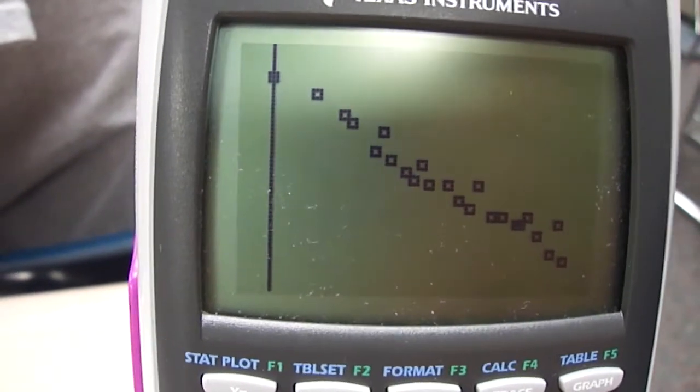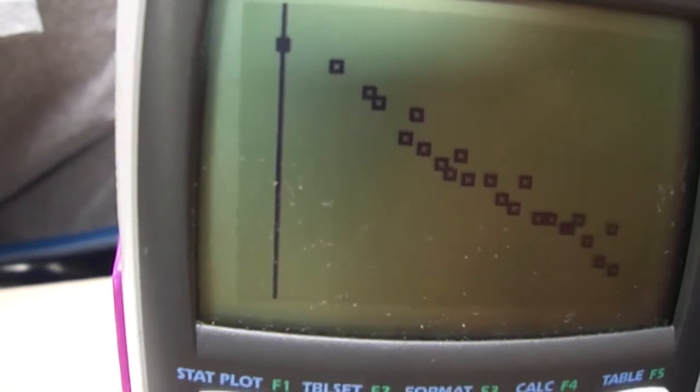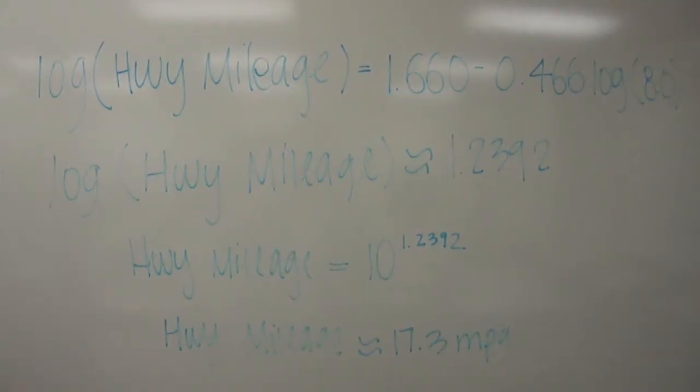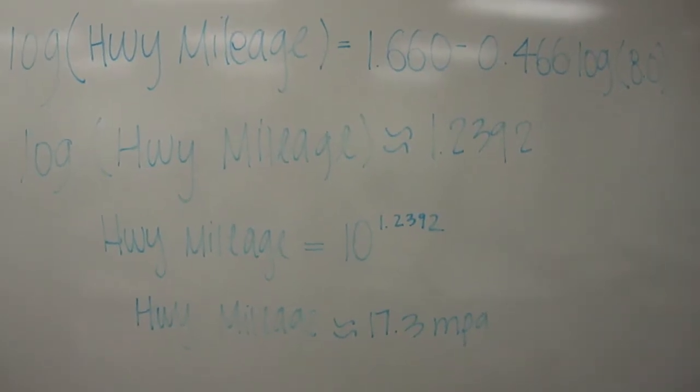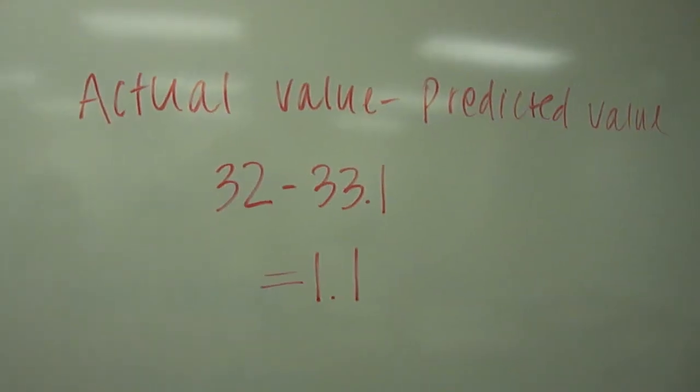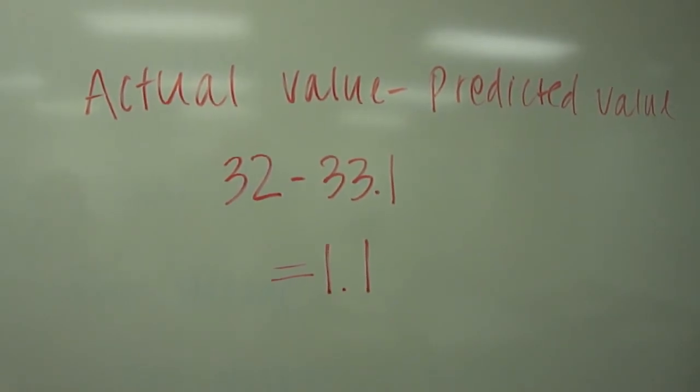Because the log of x and the log of y show the linear relationship, we know it's a power model. We took the log of both sides of the equation and we got 17.3 miles per gallon. The residual for a two-point liter engine is approximately 1.1 miles per gallon.